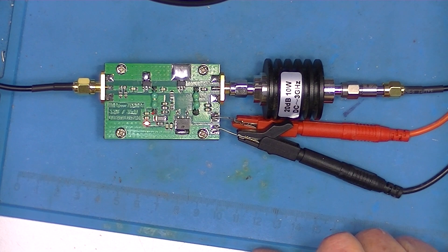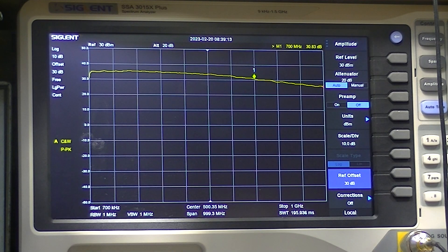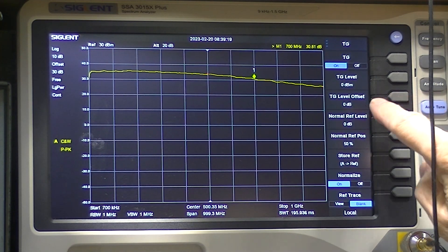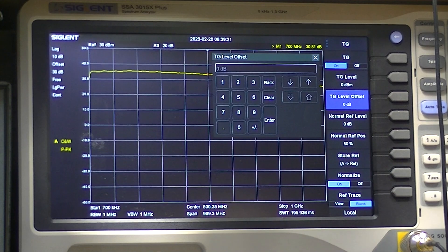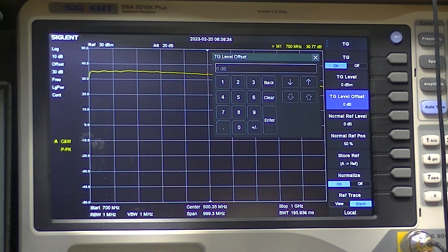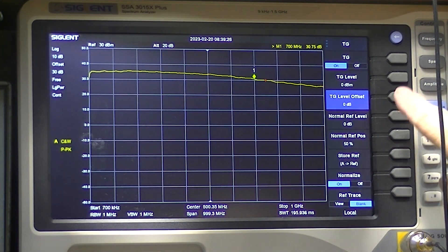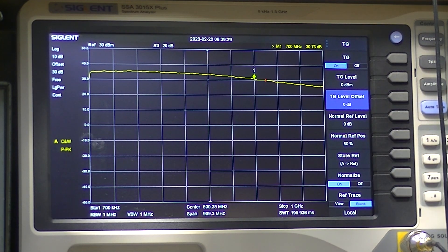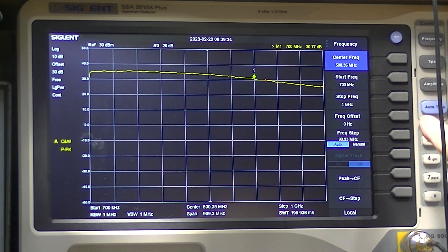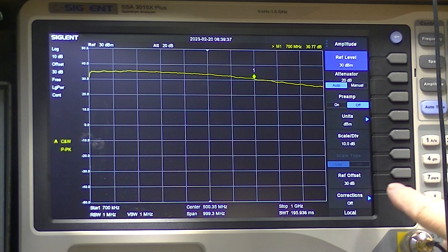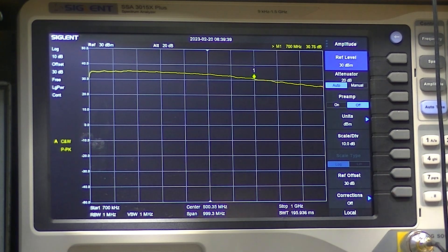Looking at the spectrum analyzer. I have a tracking generator on and normalized. Tracking output is 0 dBm. So that is the input to our amplifier. I have an offset of 30 dB to allow for the attenuator.